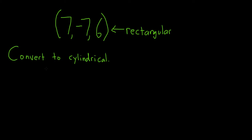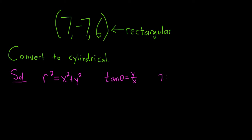In this problem, we have a point in rectangular coordinates and we have to convert it to cylindrical. So let's go ahead and work through this. Recall there are a few formulas that we need to use: r squared equals x squared plus y squared, the tangent of theta is equal to y over x, and z is simply equal to z. The final answer has to have the form (r, theta, z) — that's the form of a point in cylindrical coordinates.